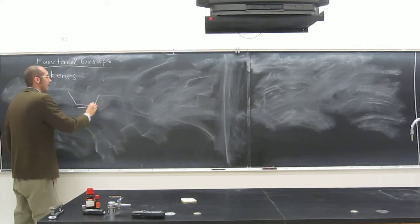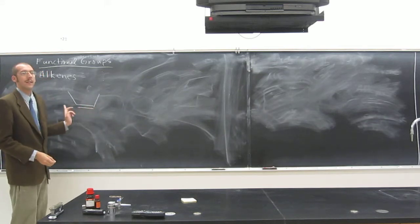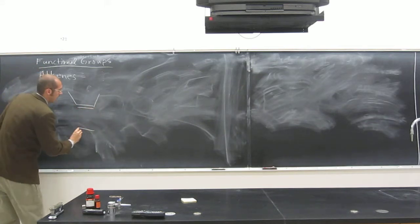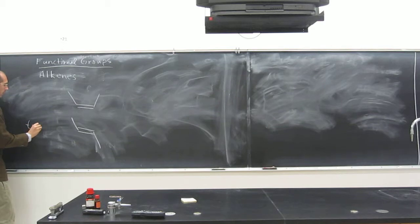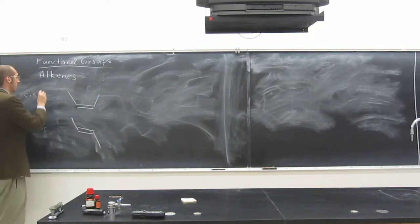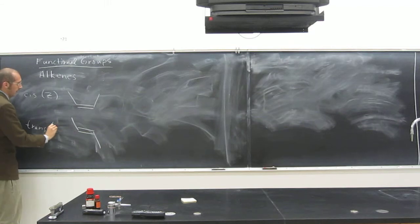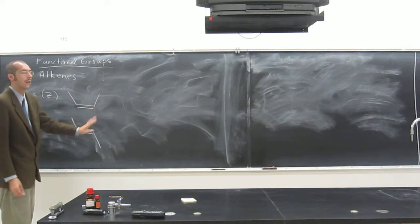Remember we talked last time, we can have cis alkenes or trans alkenes where the big group is on opposite sides. Cis is where it's on the same side. Or Z, remember, is anxiety. So you can have these types of alkenes.